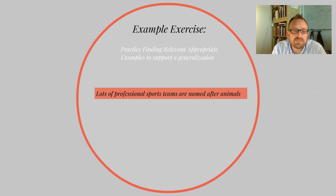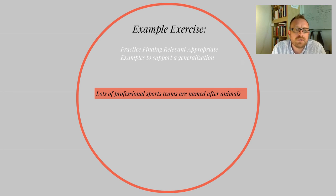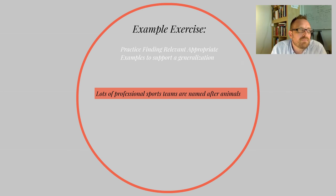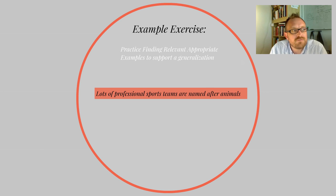Here's an example: imagine if someone made the claim 'lots of professional sports teams are named after animals.' In the exercise, you're going to create your own generalized argument to support this claim. For instance, you might say the Bears — in football, the Bears are a team named after an animal. In baseball, the Cardinals is another team named after an animal.